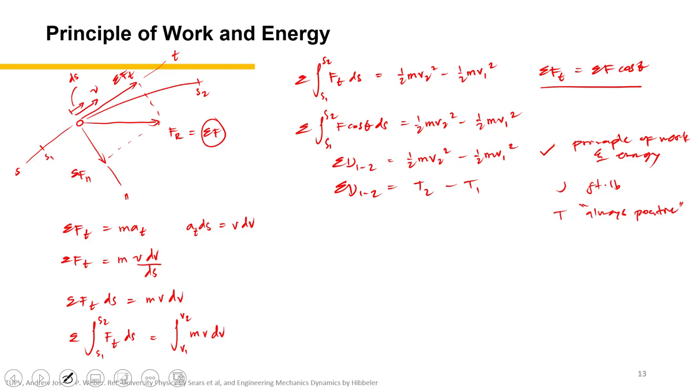So the final expression of this form is often like this: T1 plus U equals T2, which states that the particle's initial kinetic energy plus the sum of all the work done by the tangential components of all the forces that are acting on the particle is equal to the particle's final kinetic energy. So that is the meaning of this equation.